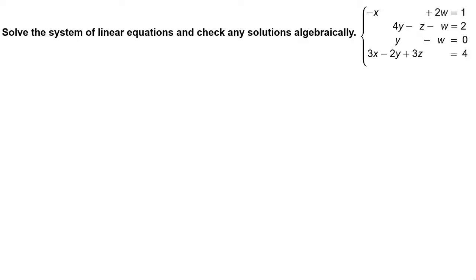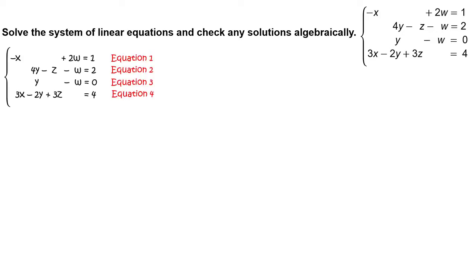Solve the system of linear equations and check any solutions algebraically. The system has equations: negative x plus 2w equals 1, 4y minus z minus w equals 2, y minus w equals 0, and 3x minus 2y plus 3z equals 4.